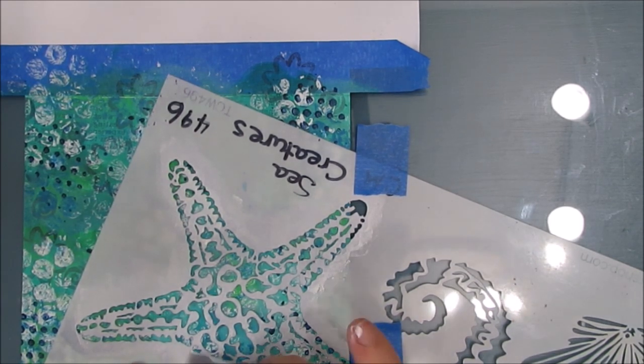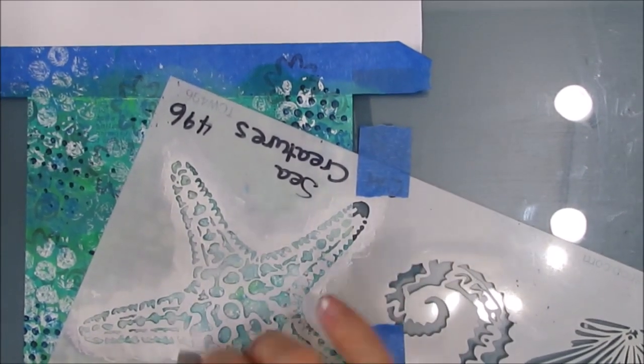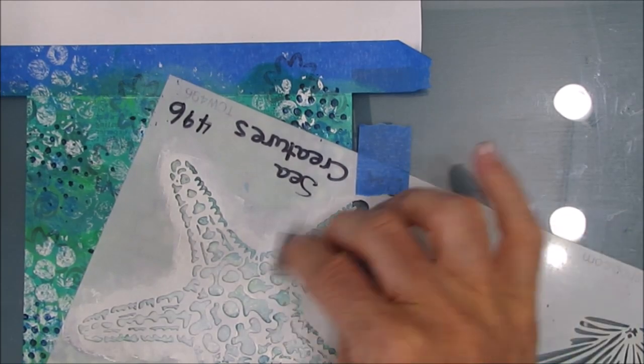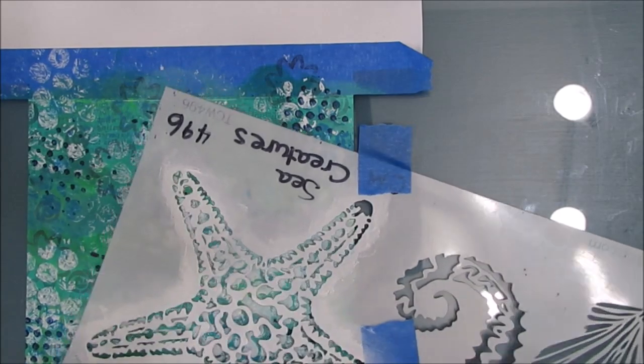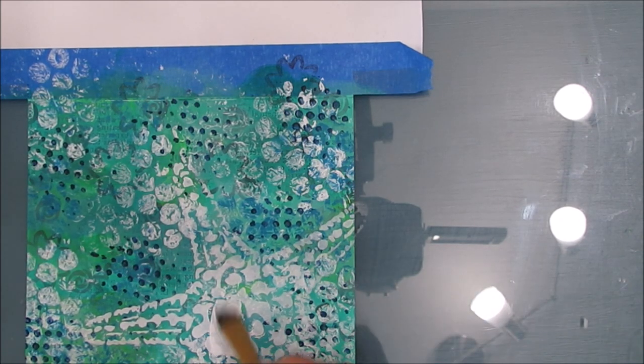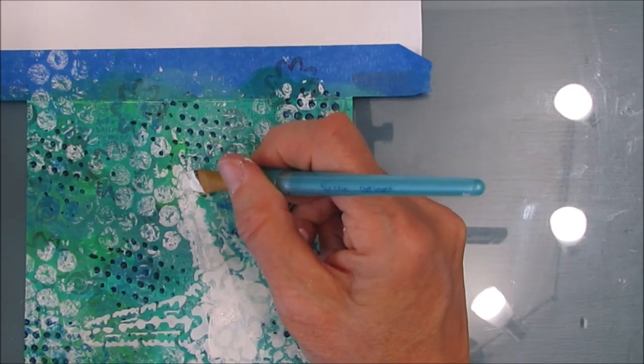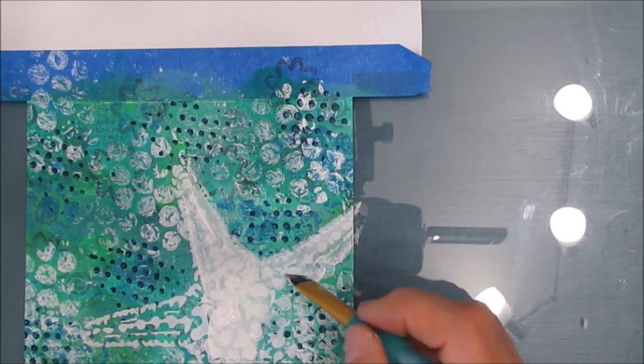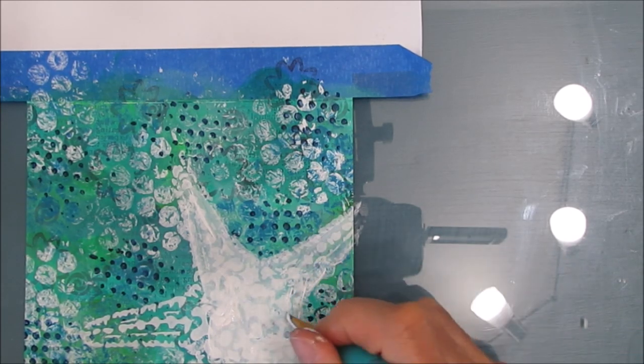Stencil butters are similar to modeling paste, a little thinner but have this amazing sheen. Before I get to that, I'm doing kind of a two-step stencil process. I'm stenciling with white because I want the shape of the starfish. Then I'm going to paint the entire starfish solid white so when I do the stencil butter I have a white background instead of the aqua and blues peeking through.